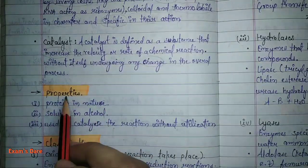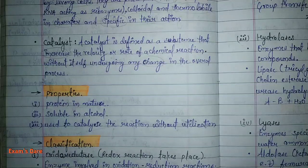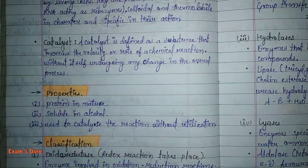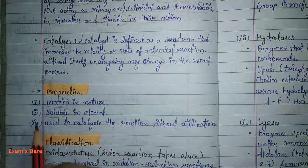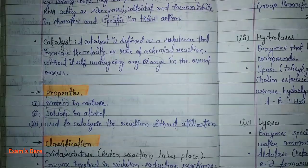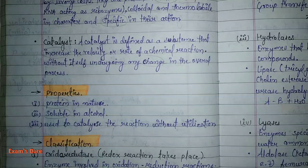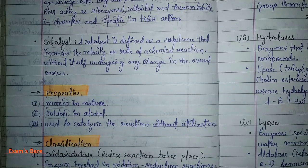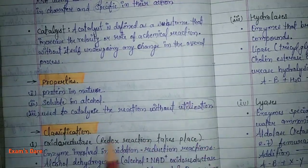Properties of Enzymes: Enzymes are protein in nature. They are soluble in alcohol. They catalyze reactions without utilization — meaning a small amount of catalyst is sufficient to create a product. After the product is formed, the enzyme is extracted out and is not utilized or consumed in the product. This is the property of enzymes: they work without utilization.